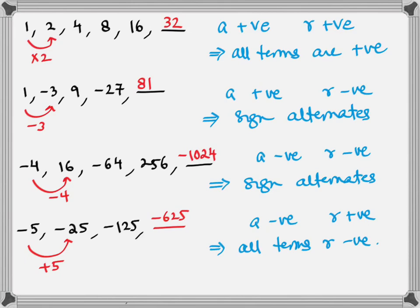One more thing to observe is that the multiplication factors chosen in these four series are integers: 2, -3, -4, +5. They are making the numbers increase in size — the numbers are swelling up.